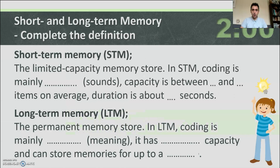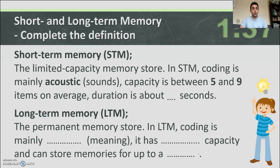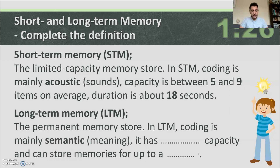Plenary — complete the definitions: Short-term memory is the limited capacity memory store. Coding is mainly acoustic; capacity is between 5 and 9 items (7±2 on average); and duration is about 18 seconds. Long-term memory is the permanent memory store. Coding is mainly semantic; it has an unlimited capacity and can store memories for up to a lifetime.